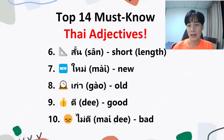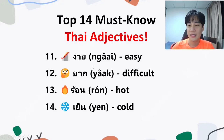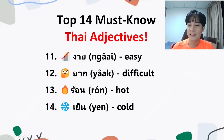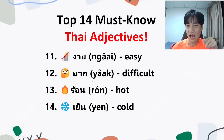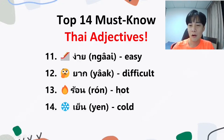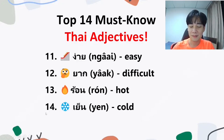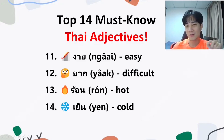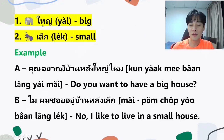In Thai we have a lot of kinds of 'bad,' but the most simple one is ไม่ดี. So ดี is good and ไม่ดี is bad. Number 11, ง่าย — easy. Falling tone, ง่าย. Number 12, ยาก — difficult or hard. Falling tone, ยาก. Number 13, ร้อน — hot. Rising tone, ร้อน. Number 14, เย็น — cold. Flat tone, เย็น.